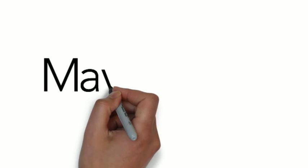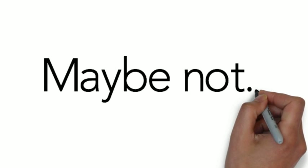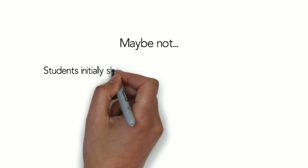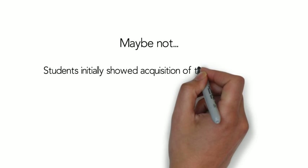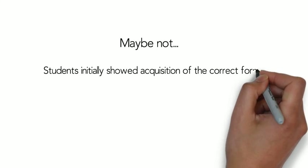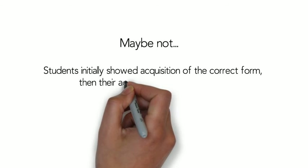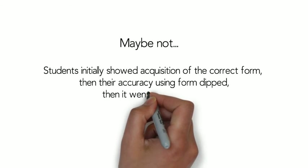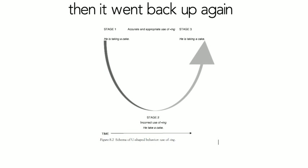In 1983, Patsy Lightbown studied French middle schoolers in English class. In the first stages of practicing ING and the present progressive, students accurately said things like, he is taking a cake, showing that they had initially acquired the correct form in use. Over time, students started saying, he take a cake. But eventually, they returned to producing forms like, he is taking a cake. If we were to draw a line graph of these students' performance, it would not show linear improvement. Instead, it would start high, drop low, and then come back up, looking like a U.